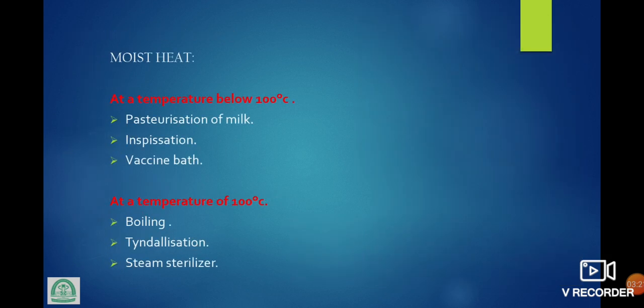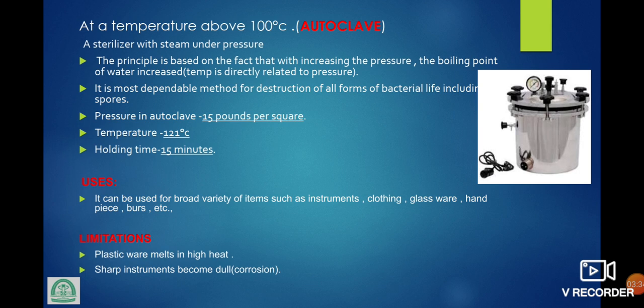Moist heat — at a temperature below 100 degrees Celsius there are 3 methods: pasteurization of milk, inspissation, steam in water. At a temperature of 100 degrees Celsius there are 3 methods: boiling, tyndallization, steam sterilizer. At a temperature above 100 degrees Celsius: autoclave method — the most widely acceptable method. The principle is based on the fact that increasing the pressure raises the boiling point of water. Pressure in autoclave: 15 pounds per square inch. Temperature: 121 degrees Celsius. Holding time: 15 minutes. Uses: clothing, glassware, handpiece, burs, etc. Limitation: plastic items melt in high heat; sharp instruments and burs can cause corrosion.